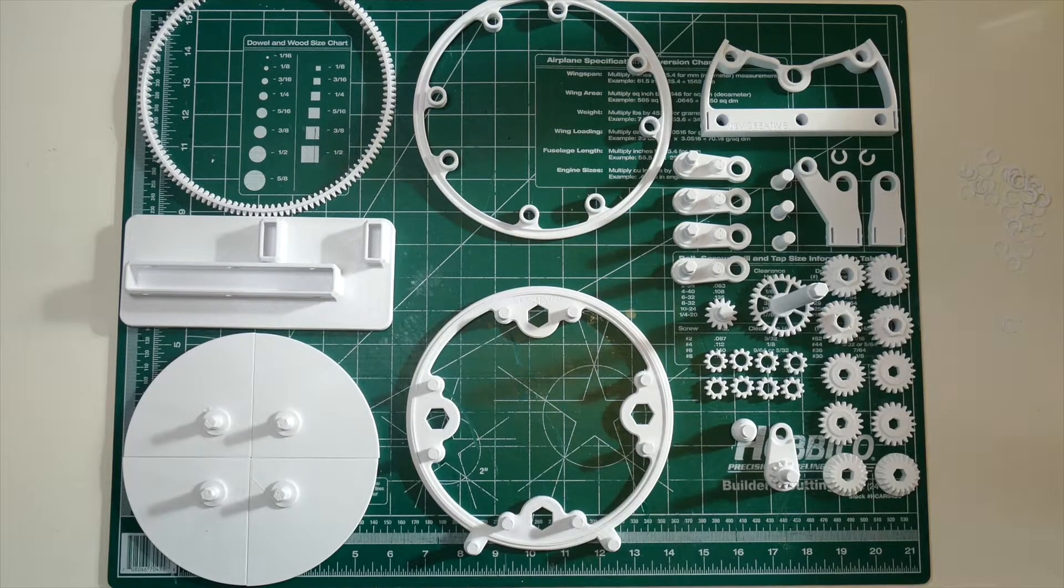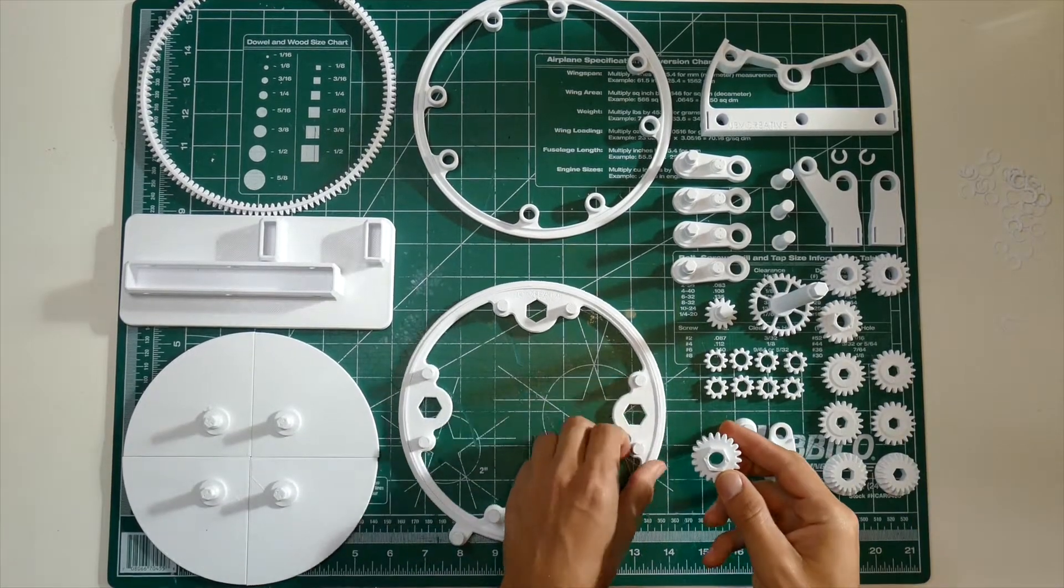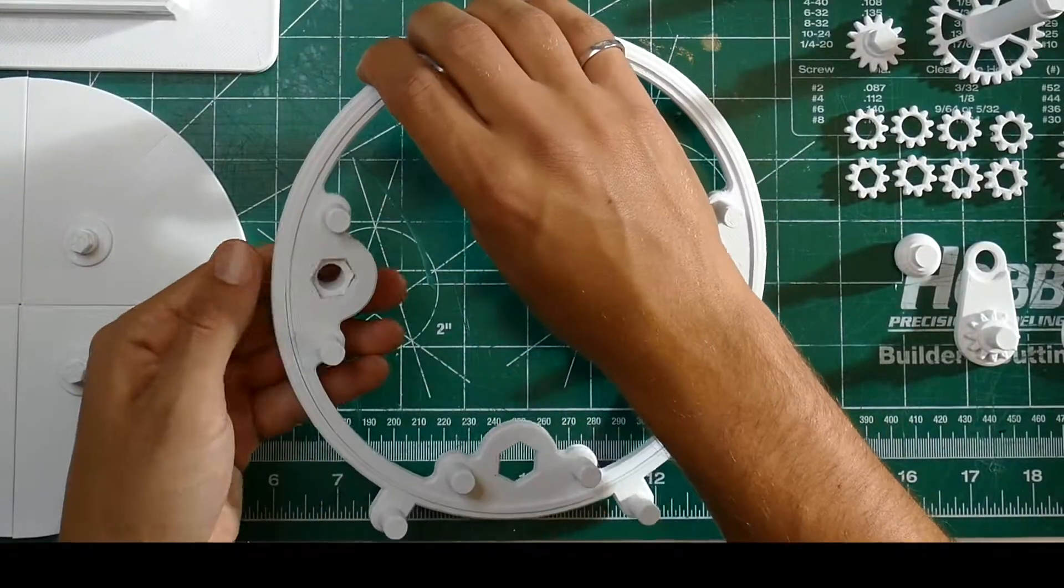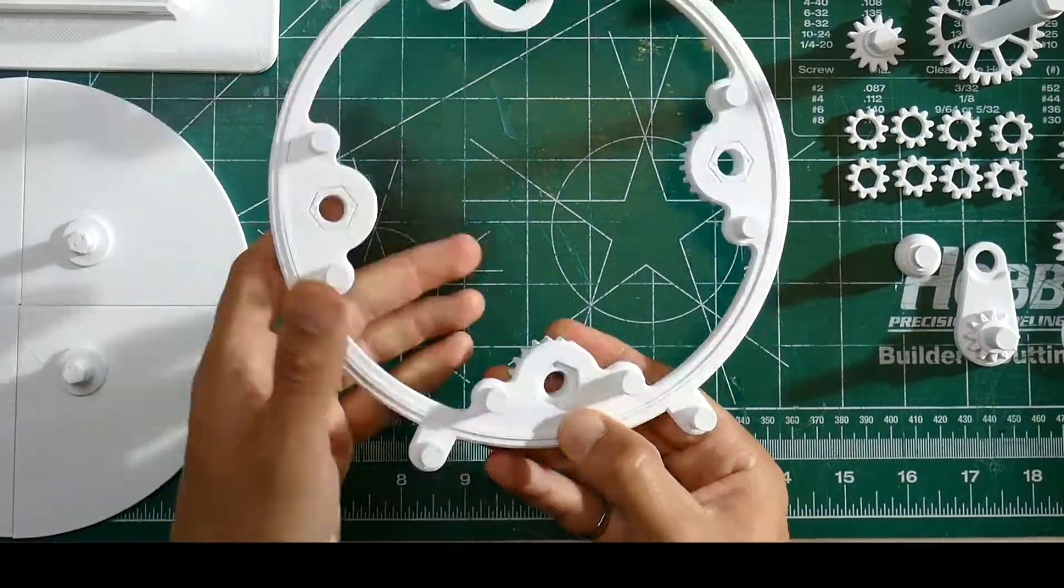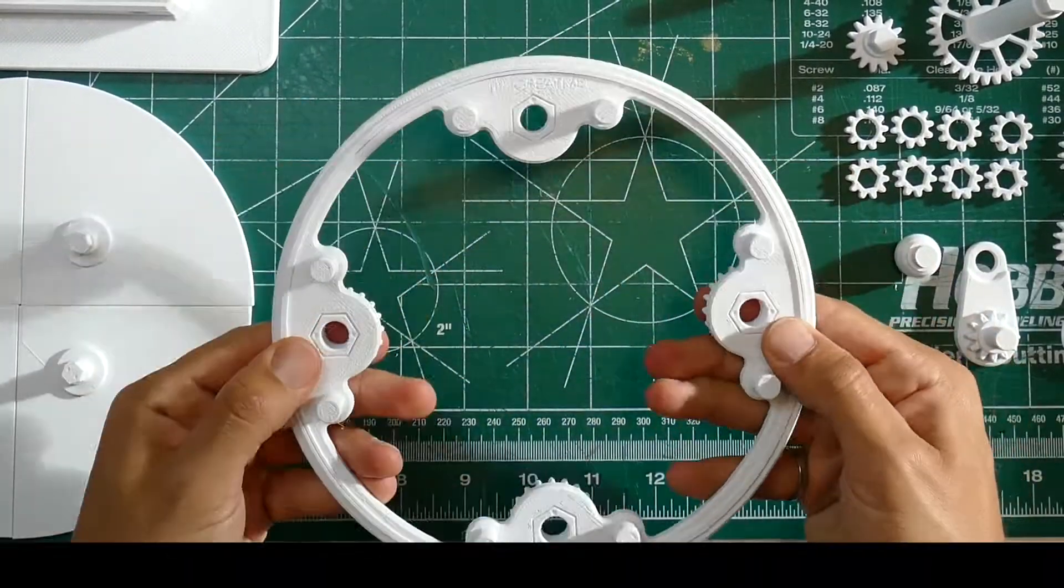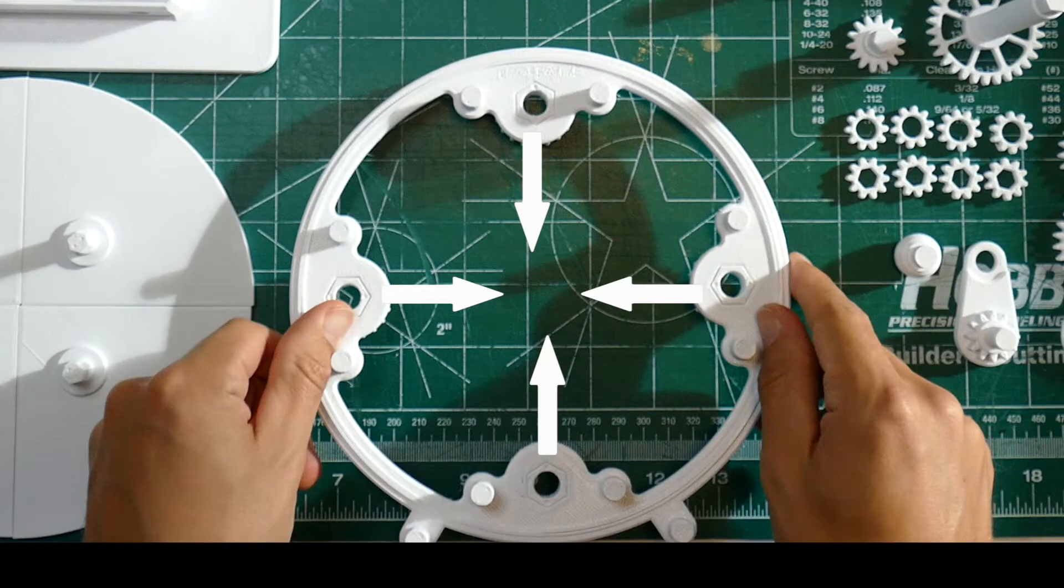Once you have all of your parts printed, start with one of these gears with the hex coming out of it and put it in with this orientation with the dots oriented towards the center of the circle. Now repeat with the other three hex gears. Make sure all the dots are facing the center of the circle.